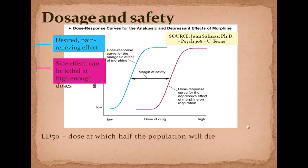The LD50 is the lethal dose at which half the population will die. It's established often not by experiments but by records — you keep records of how much someone took and whether or not they died, or you use animal models. The LD50 is the lethal dose at which 50% of people who take that dose die.